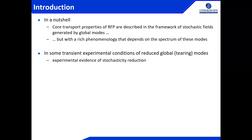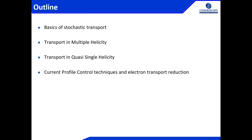In a nutshell, the core transport properties of the RFP are described in the framework of stochastic fields generated by global modes. But the phenomenology is so rich that it cannot be simply rephrased in terms of amplitude of magnetic fluctuations per se — there is much more richness in regimes. In some transient experimental conditions there are experiments in which this stochasticity is disappearing, but it happens only transiently.